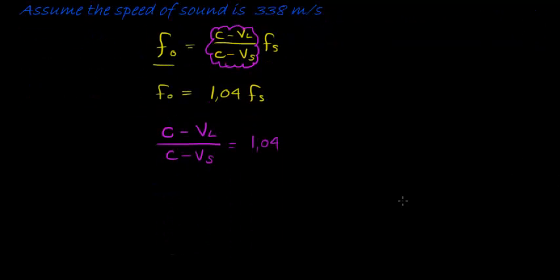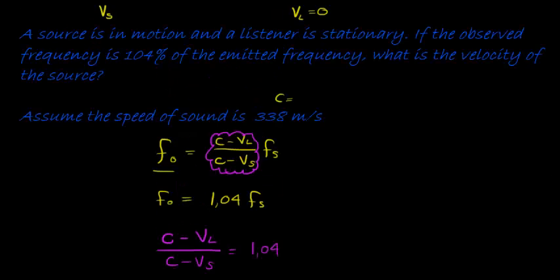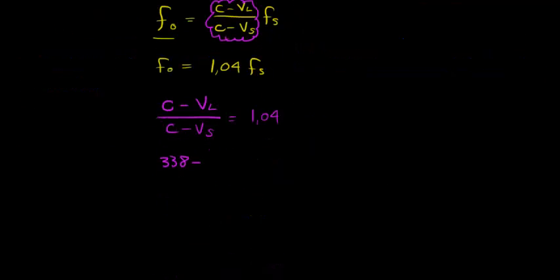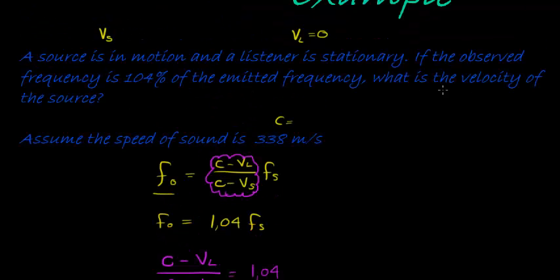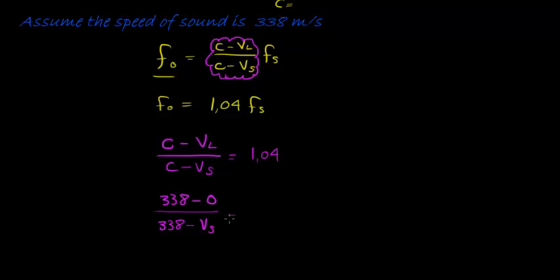And we know that the velocity of the speed of sound is 338. The velocity of the listener, they told us that the listener is stationary, so that's 0. And the velocity here is still 338 minus the velocity of source is what we are requiring. So this is the unknown in the function. The velocity of the source is equal to 1.04.